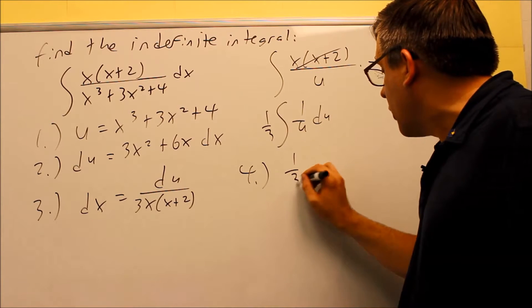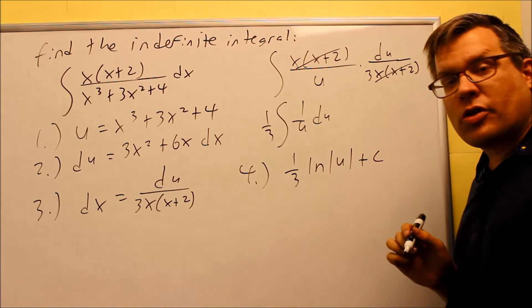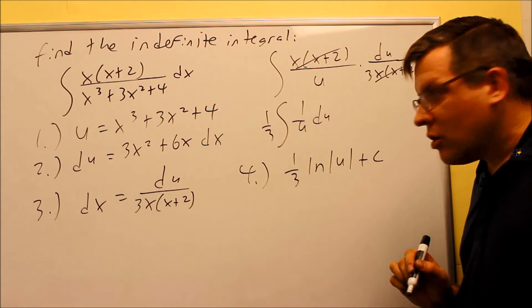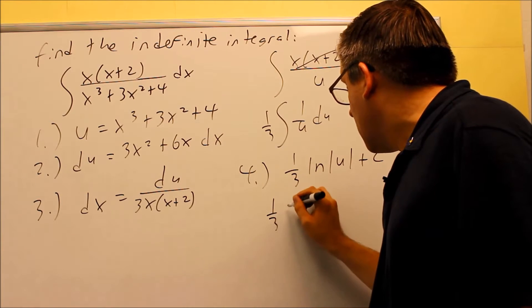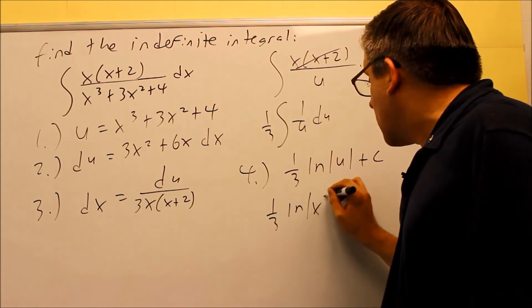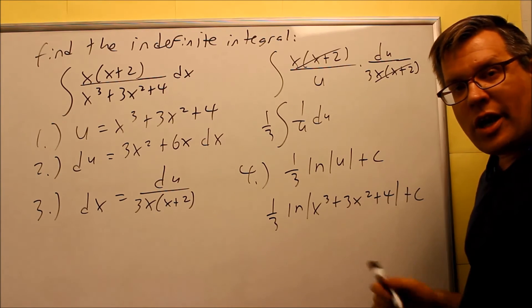When I integrate, I get 1 third. This will turn into a natural log of u plus c. We're just using that formula that we just talked about. The u here is this whole thing, so I'm going to put that back in. So I have natural log of x cubed plus 3x squared plus 4 plus c.